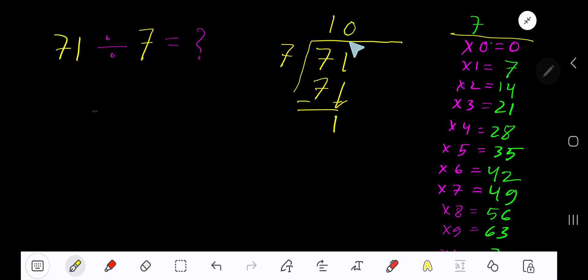7 goes into 1 how many times? 0 times, as 1 is less than 7. 0 times 7 is 0. Subtract 1. So this 1 is now the remainder. Our answer is 10 remainder 1. If you want to write your answer in decimal form, continue.